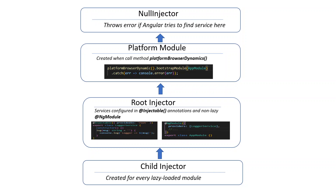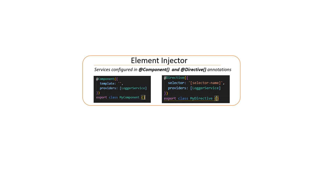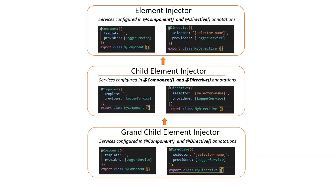Now let's talk about the element injector. If we provide services in a component or directive using the providers array, it creates an element injector, which is a completely separate injector. The hierarchy mirrors the element structure — a child element creates a separate child injector, and this applies to grandchild injectors as well. If you try to inject a service at any level, it starts looking at the current injector and then traverses up toward the top.